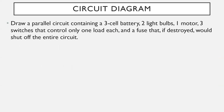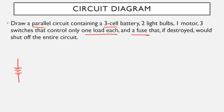Draw a parallel circuit containing a three-cell battery, two light bulbs, one motor, three switches that control only one load each, and a fuse that if destroyed would shut off the entire circuit. My strategy is to start with the battery. It's a three-cell battery, so I draw negative-positive for each cell — three cells — and then connect them with wires so it starts to form a circuit.